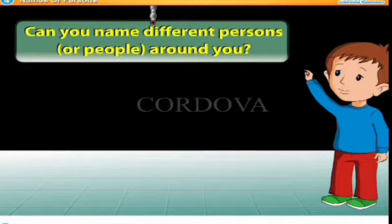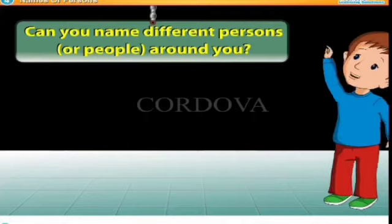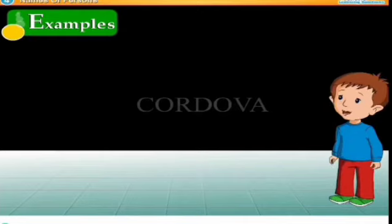Names of persons can also be recognized. Hum unko unke kaam se bhi jaante hain. For example, doctors, teachers, carpenters, baby — these are the names of persons.